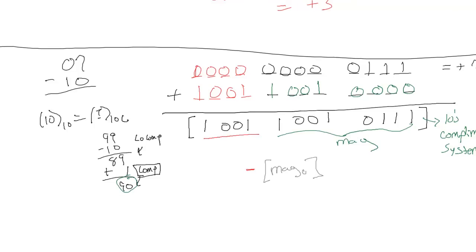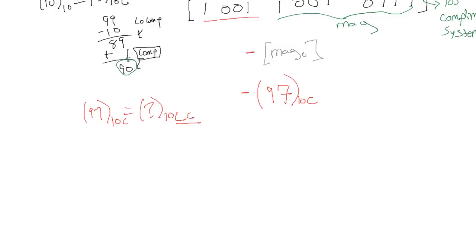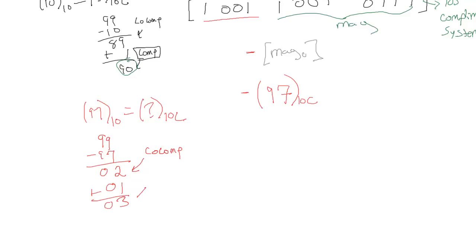Reading the magnitude field, we have 97 in BCD. We need to find the complement of 97 base 10. Taking the complement of a complement gives back the original: 99 minus 97 = 02 (co-complement), then add 1 to get 03. So the answer is negative 03 base 10, i.e., negative 3. This confirms that 7 minus 10 equals negative 3.